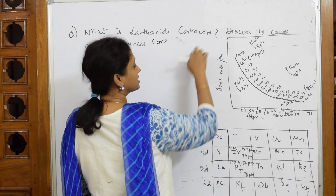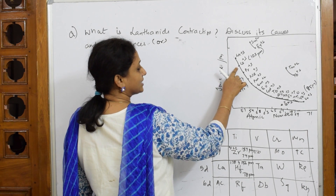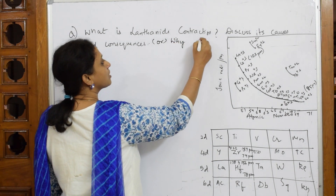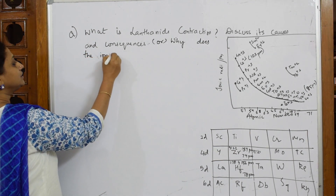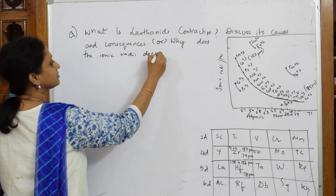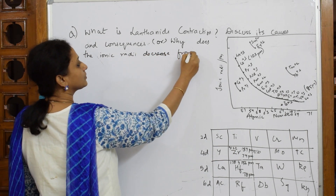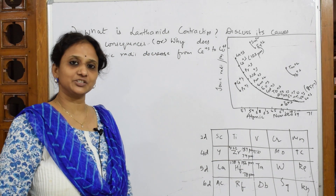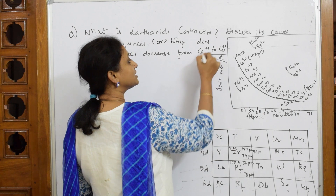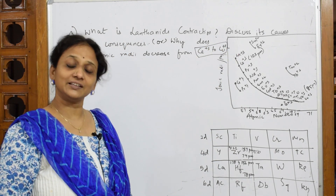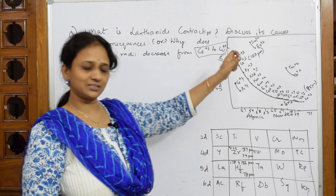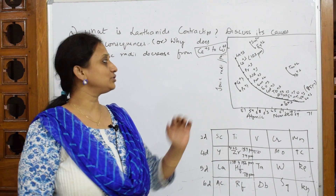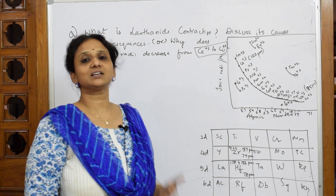If it is not a direct question, they may ask: why does the ionic radii decrease from lanthanum plus three to lutetium plus three? Don't get confused. When you see cerium to lutetium, just remember lanthanum to lutetium — they are asking about lanthanide contraction. Cerium, lanthanum — all these are lanthanide elements. They may phrase it this way to confuse you, but when you see lutetium, recognize it as lanthanide contraction.